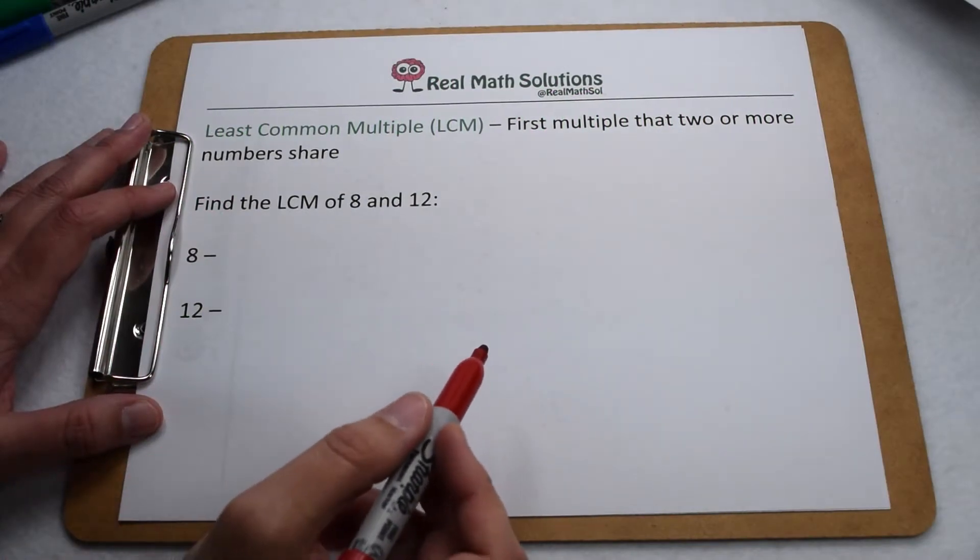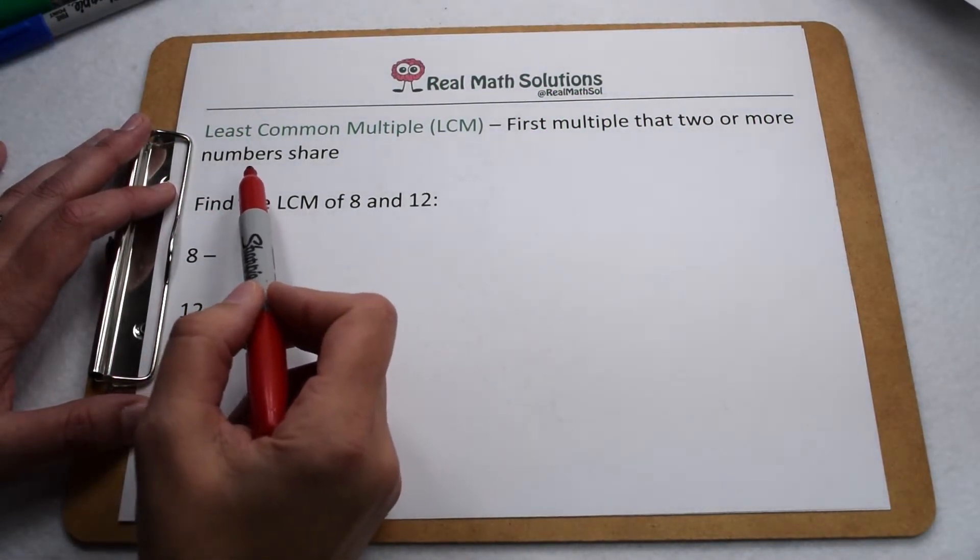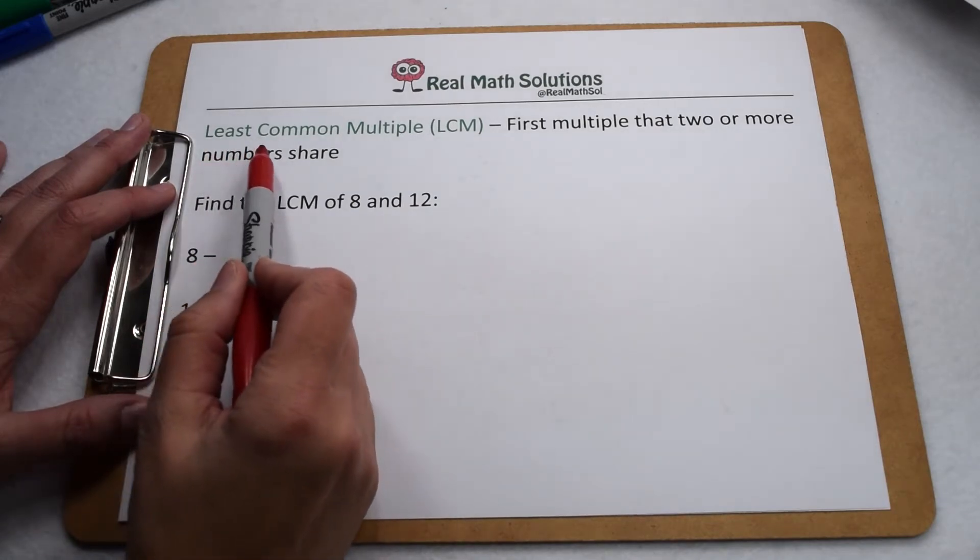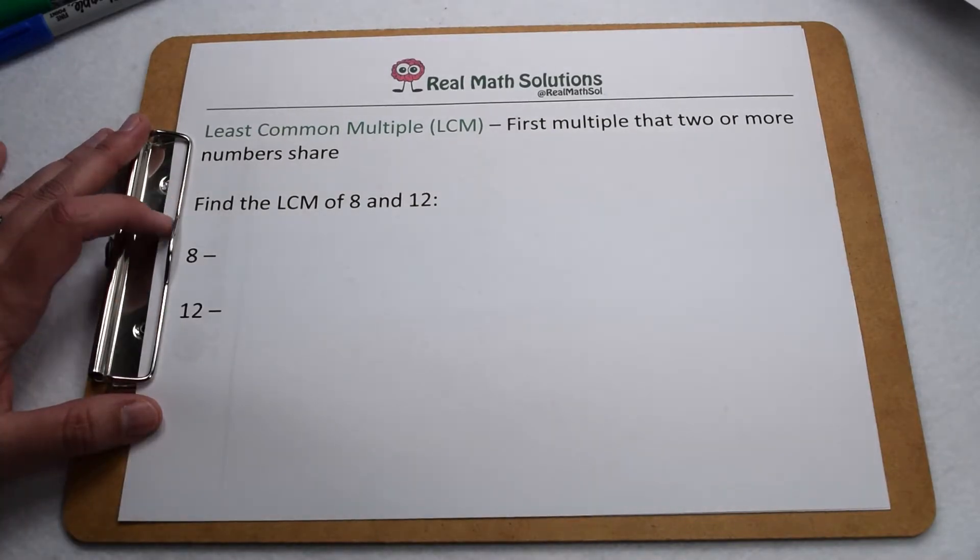We know that multiples of a number are the product of that number and another whole number. Common multiples are those which two or more numbers share. When we're looking at common multiples, we're frequently finding the least common multiple, which is the first multiple that two or more numbers share.